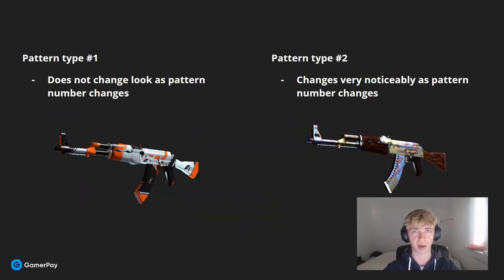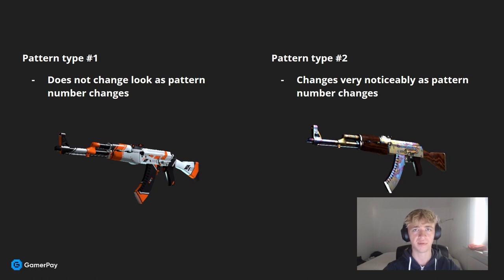You could argue there are two types of patterns: one type where the pattern has no influence on how the skin looks, and another type where the pattern number has a great influence on how the skin looks. There are also some skins where the pattern number will change the look of the skin slightly, but not to the point where it affects the price. The AK-47 Asimov is an example of a skin where the pattern number has no influence on how the skin looks.